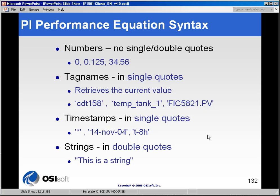In ProcessBook, we can use the same performance equation engine to generate calculation results based on raw values on the PI server. The key thing to remember about performance equation syntax is that tag names and timestamps are both in single quotes, and strings are in double quotes. So if you had an expression comparing a tag value to a set point, you would put that tag's name in single quotes. If you were comparing a digital tag's value to a specific discrete value, you would put that value in double quotes because it is treated as a string.